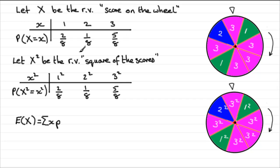But we could equally work out E(X²), what we would expect the square of the scores to be. And that would be called E(X²). And to do that, nothing's going to change.